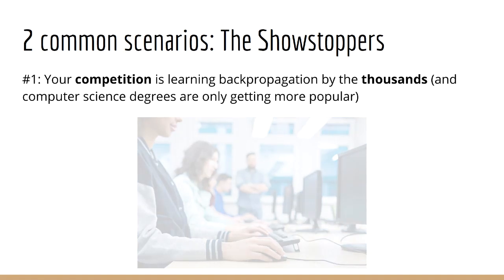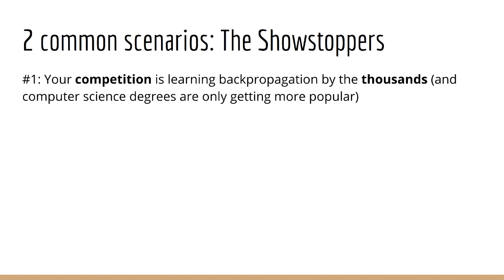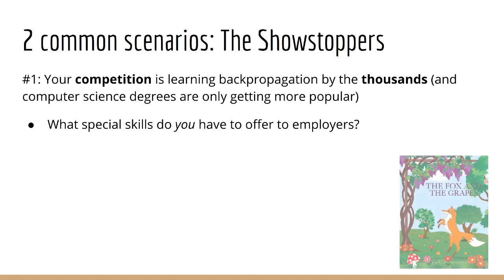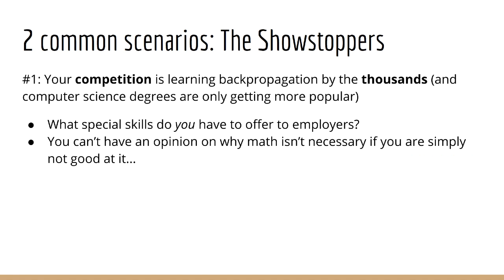Thousands upon thousands of students are graduating with computer science degrees every single year, and it's only getting more popular thanks to machine learning. If they have these skills but you do not, how will that make you look in front of your next employer? What other special skills do you have to offer that would make up for or even outshine those students who have graduated and do know backpropagation and the math behind machine learning? Of course, you can't really answer this question confidently unless you truly know what knowing the math has to offer. You can't have an opinion simply because you don't like math or you're not good at math — then your opinion is simply uninformed. You have no idea what your competition knows, and that is even worse.